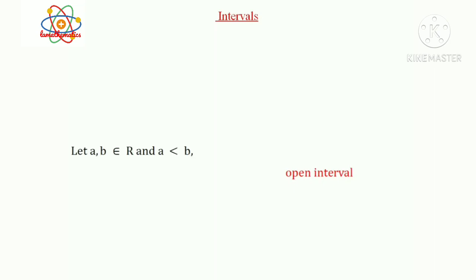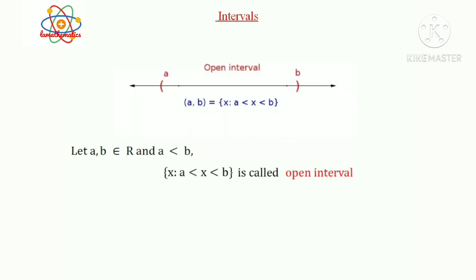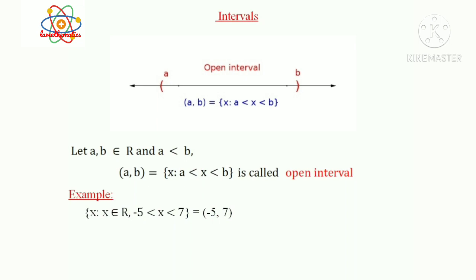In general, let a, b ∈ R and a < b. Then the set {x such that a < x < b} is called an open interval. It is denoted by open interval (a, b). Hence we can write: (a, b) = {x such that a < x < b}. Example: the set {x such that x ∈ R and -5 < x < 7} = open interval (-5, 7).